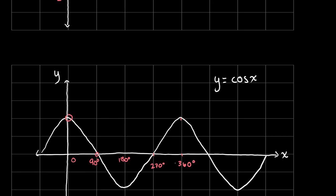The maximum point is once again 1, and the minimum point is negative 1. That's because cosine equals adjacent over hypotenuse, and the adjacent side cannot be greater than the hypotenuse, so cosine cannot be greater than 1.